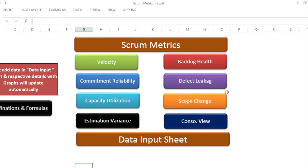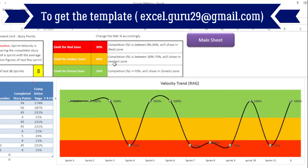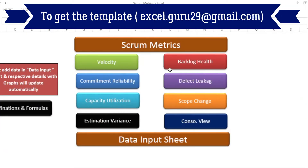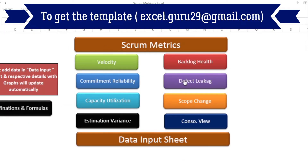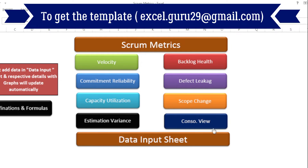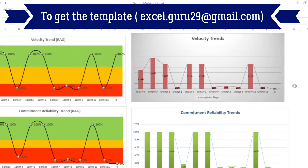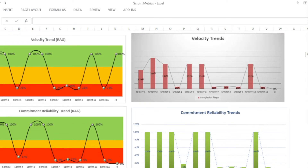Now let's go to the main sheet. Here you can see there are different buttons, and all these buttons are hyperlinked. So if you wish to access any specific scrum metric, you just need to click on that particular button and you will be taken to that sheet. For example, if you want to see your backlog health, just click on the backlog health button. There are multiple buttons, each denoting a particular scrum metric, and there is one more button at the end which shows a consolidated view of all these scrum metrics.